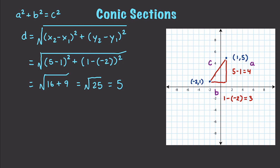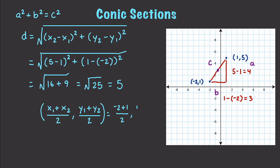So we're talking about a point that is going to lie somewhere in this area. And how we're going to find that is we're going to have (x₁ + x₂)/2 and (y₁ + y₂)/2, which is going to end up being (-2 + 1)/2 and (1 + 5)/2, to get a final midpoint of (-1/2, 3).